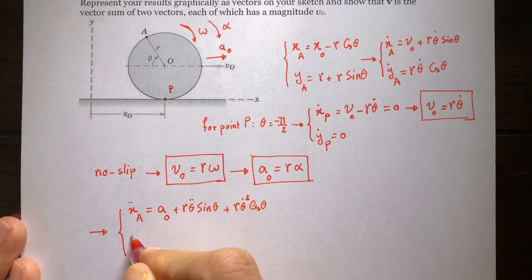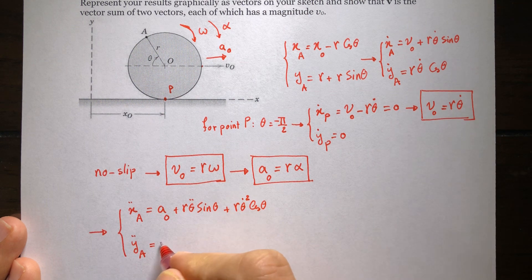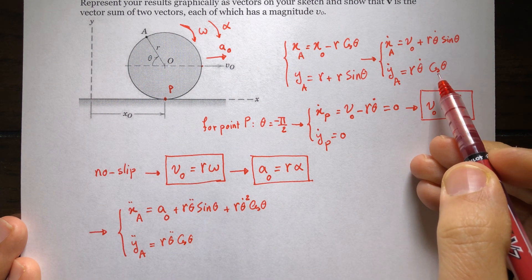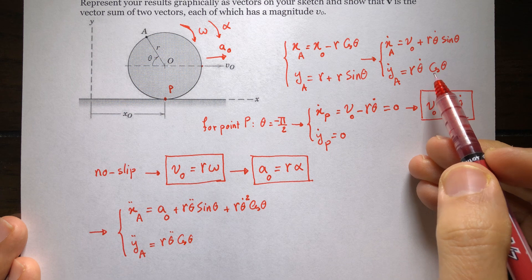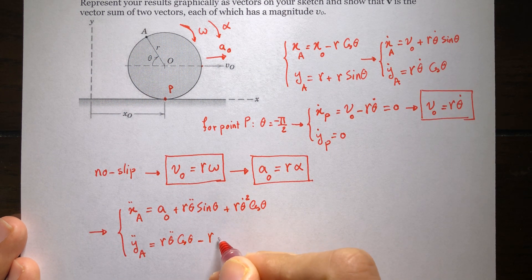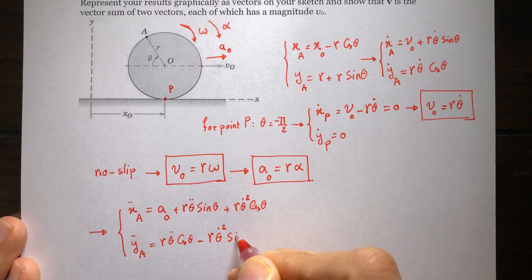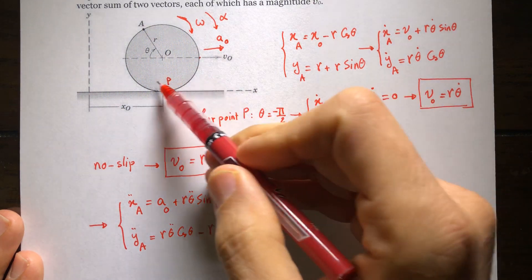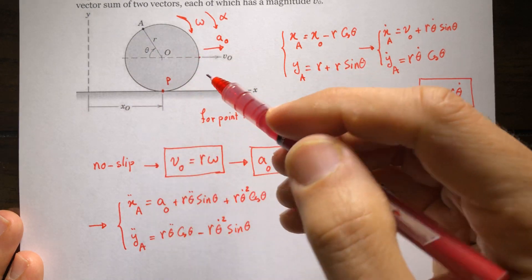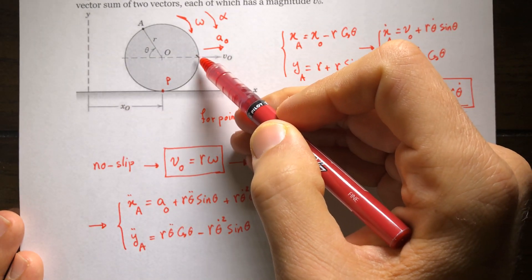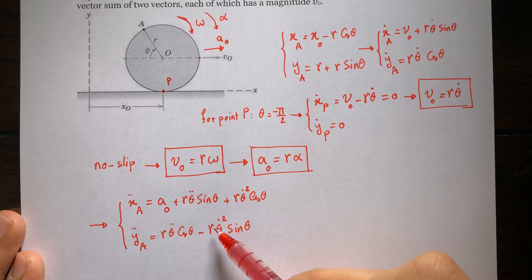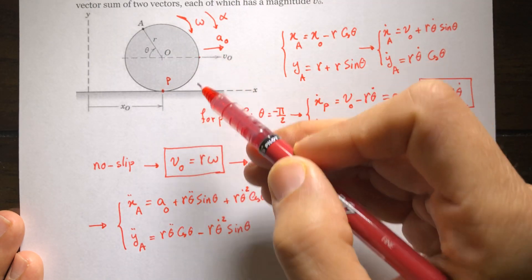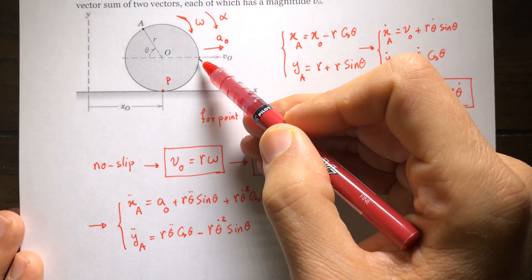Similarly, ÿ_A equals r·theta-double-dot times cosine(theta) minus r·theta-dot squared times sine(theta), since the derivative of cosine(theta) is negative theta-dot times sine(theta). These equations can be used to find the acceleration of any point on the circumference of the disk — for example, replacing theta with 90° or pi gives the acceleration of those respective points.